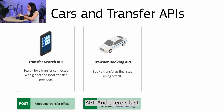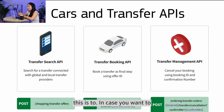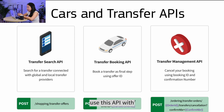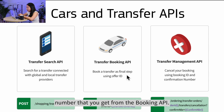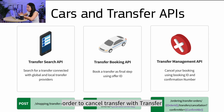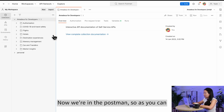The third API is the Transfer Management API, used to cancel a transfer. You will need the order ID and the confirmation number, both obtained from the Transfer Booking API response. So remember, you need two identifiers to cancel a transfer using the Transfer Management API. Now let's take a look in Postman.